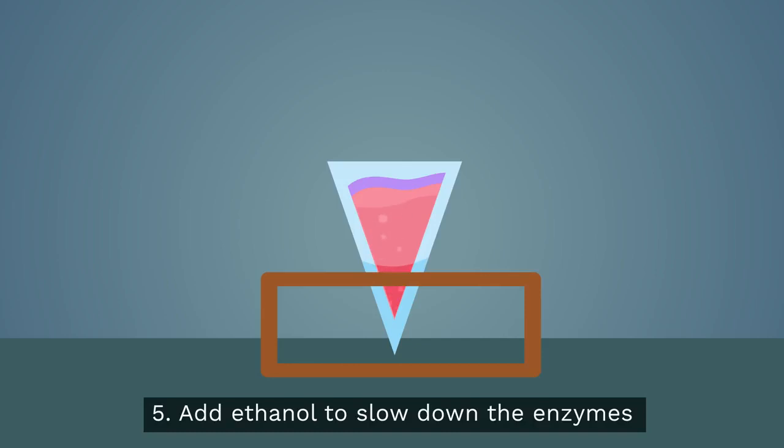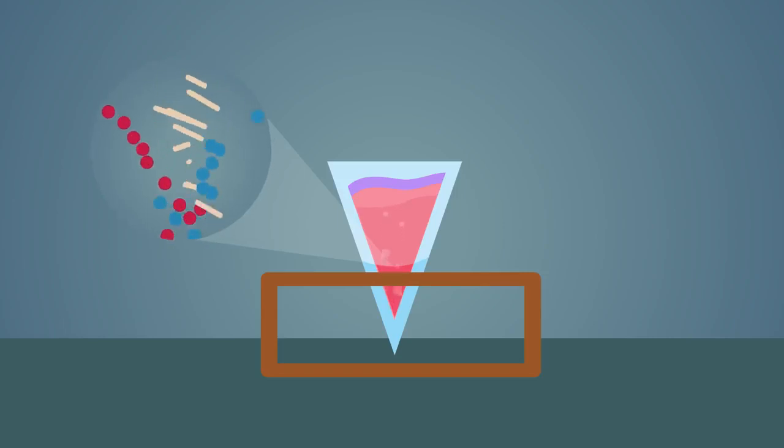The ethanol is at this low temperature to slow down the action of enzymes naturally present in the cell that will break down the DNA. In a normal healthy cell, these enzymes are usually kept separate from the DNA by the nucleus membrane, but you ruptured this in an earlier step.